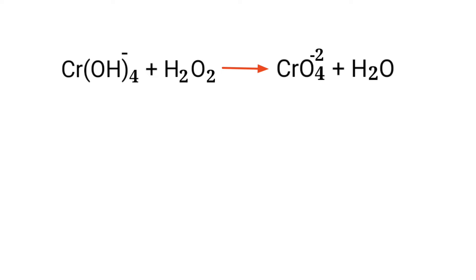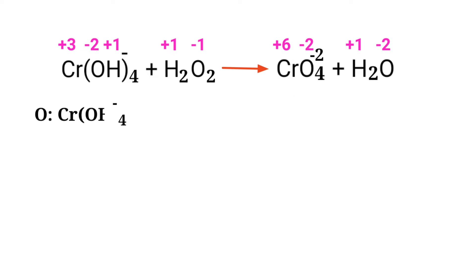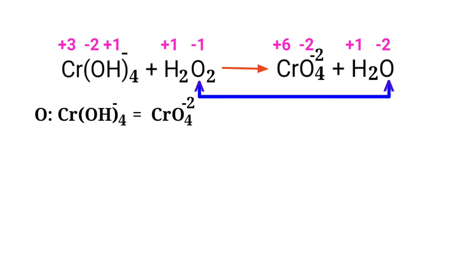Figure out the reducing and oxidizing agents by the rules of assigning oxidation numbers. In the ion electron method, one reaction is divided into two half reactions, which are then balanced and added together. Chromium has a charge of plus 3 and is changing to plus 6, so chromium is being oxidized. Oxygen has a charge of minus 1 and is changing to minus 2, so oxygen is being reduced.